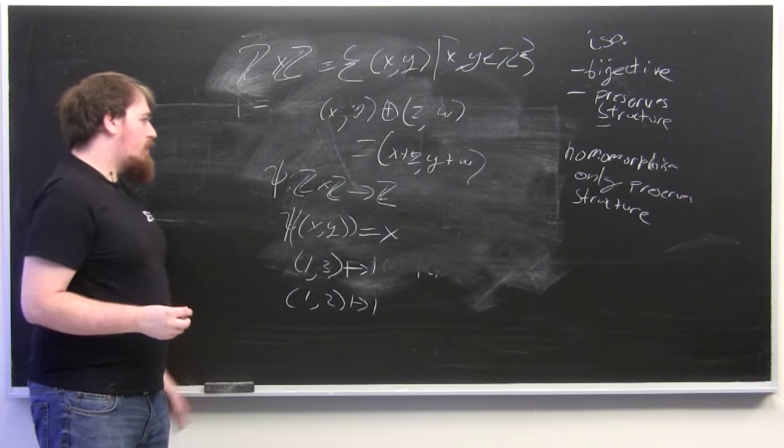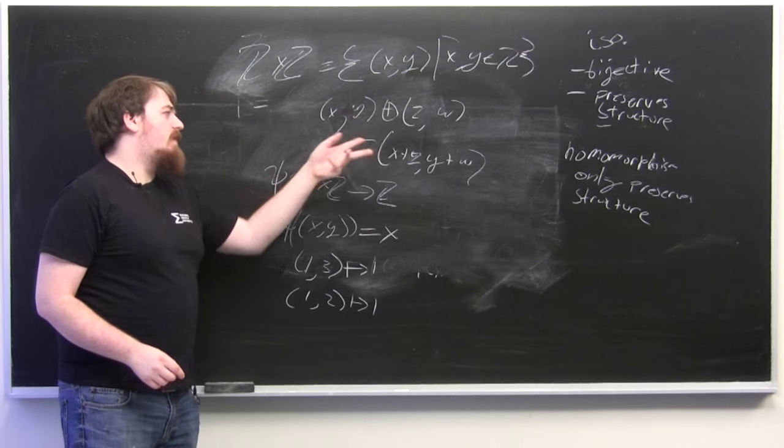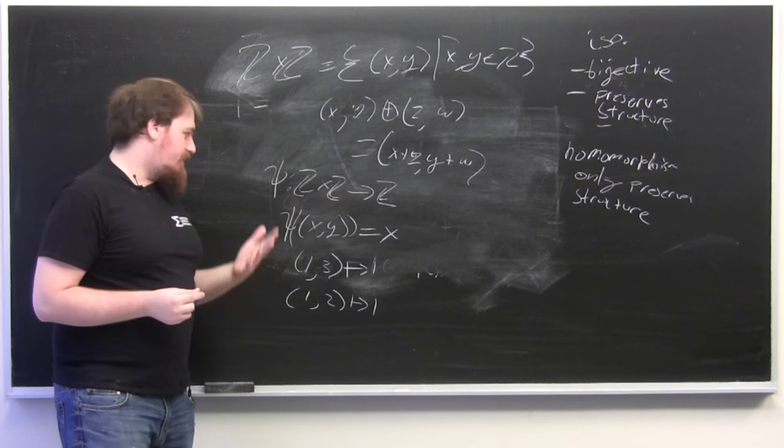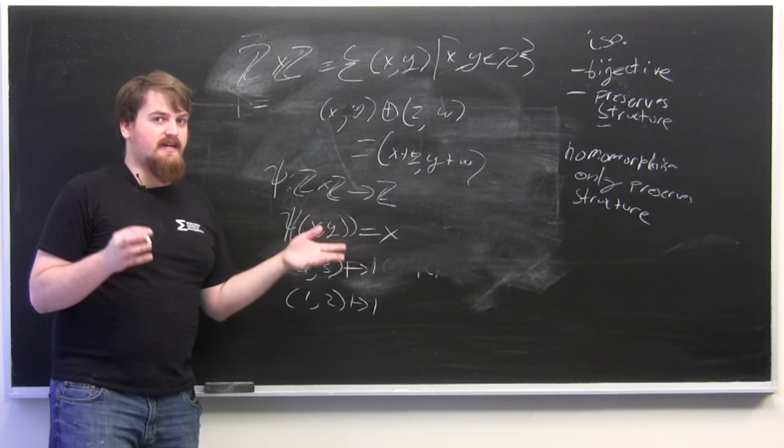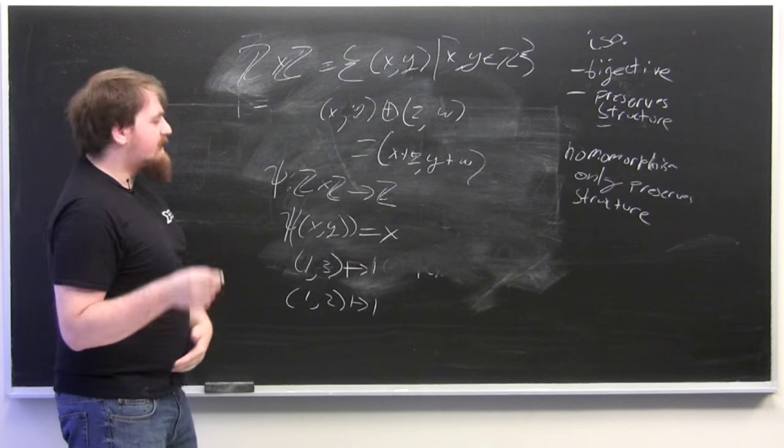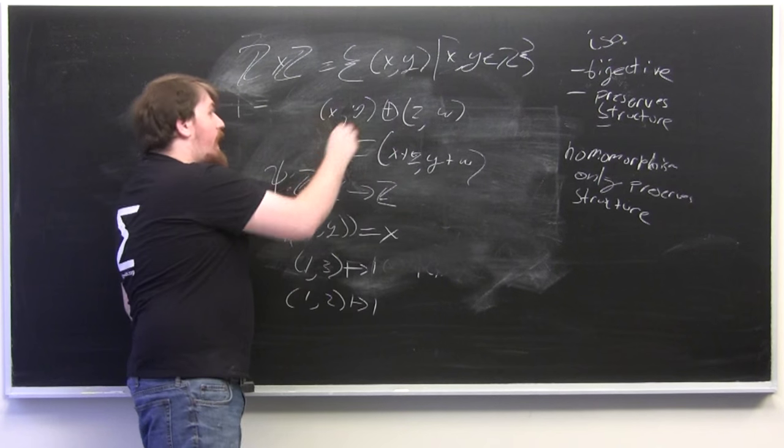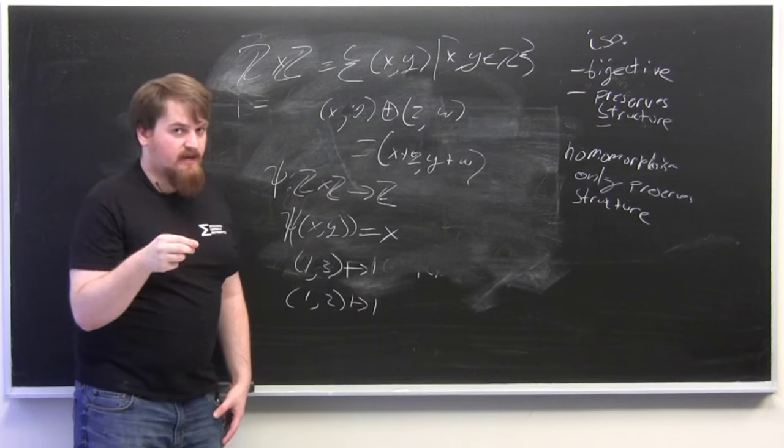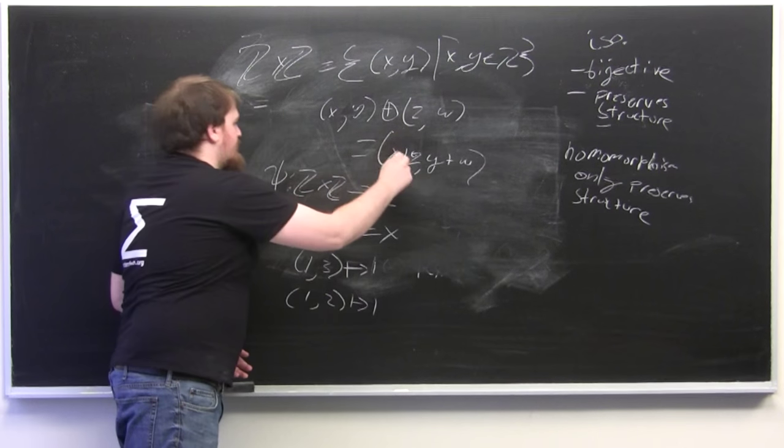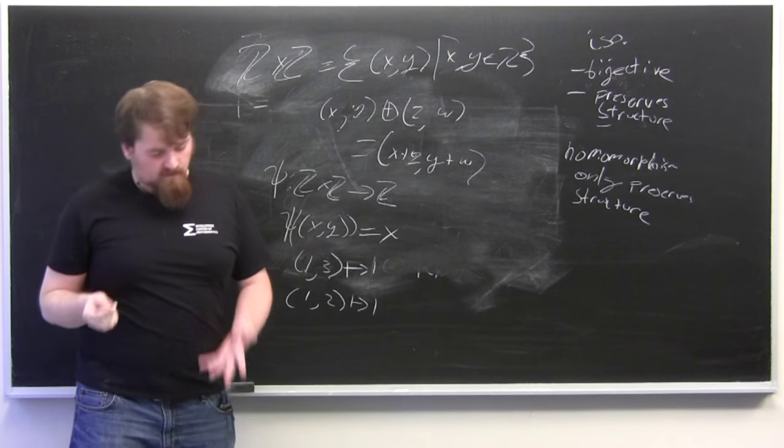However, this is a homomorphism because the sum in the first component is still the group operation of Z and this basically just forgets everything that's going on in the second component. And so everything's inverse gets sent to its inverse. So negative x, negative y would be sent to negative x whereas x, y would be sent to x and negative x is x's inverse. And this sum gets sent to x plus y but this and this summed is x plus y so it's a homomorphism.